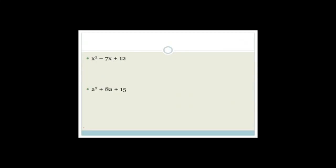So let's carry on. We've already done basic common factors, the sum and difference of two squares, and perfect square trinomials. Now what we are going to be doing is looking at trinomials that are not perfect squares. There is a technique to this, and that's what we're going to be looking at today.